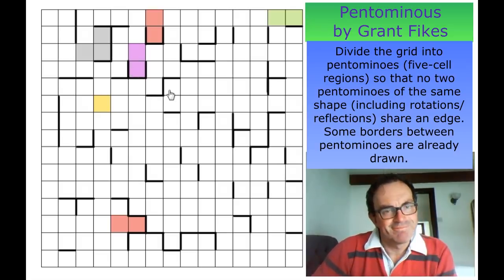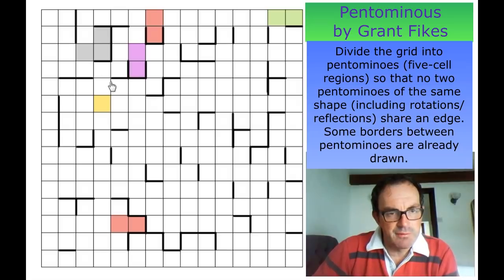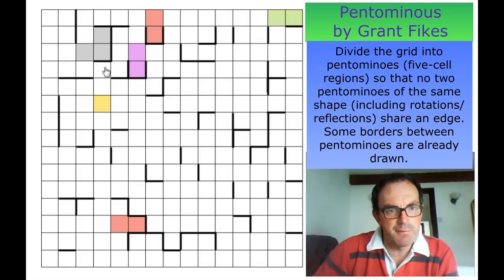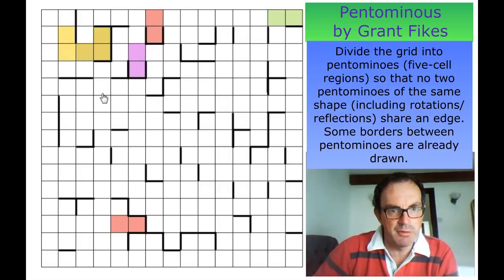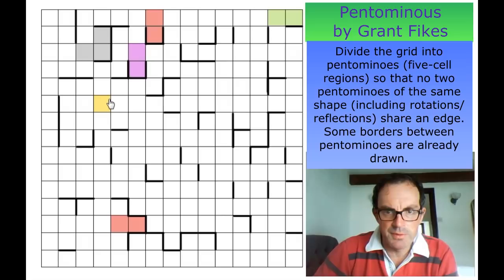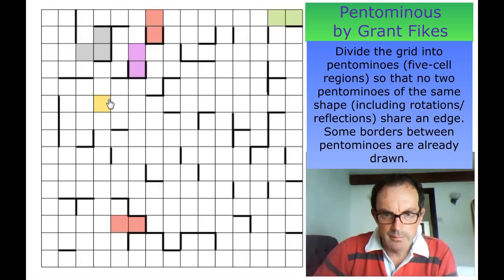The problem now is that we're running out of things that can reduce our degrees of freedom — we still have too many options. For this gray region, it could take that cell, it could come down and be a W, or it could even bend around and be a U. So that's no use. Let's look elsewhere.